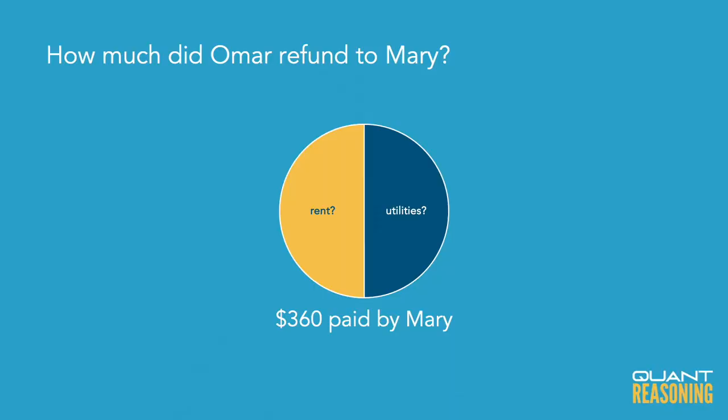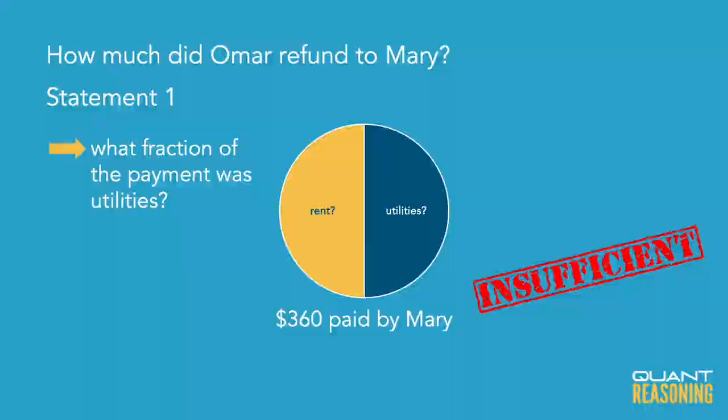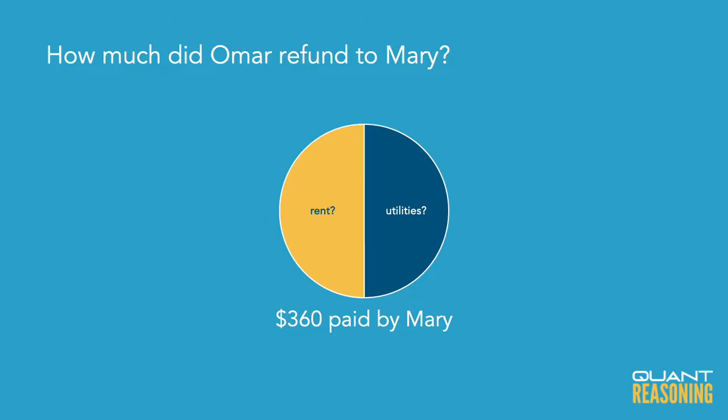Statement one is no help in that regard either. We still have no idea what fraction of the $360 went for utilities versus for rent, so even if we combine these statements we just can't figure out this question. We just don't know of the $360 how much was for utilities, and therefore the correct answer is E.